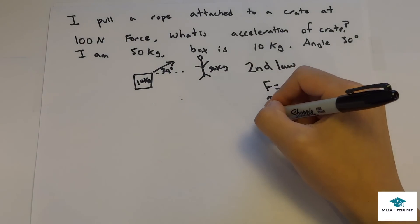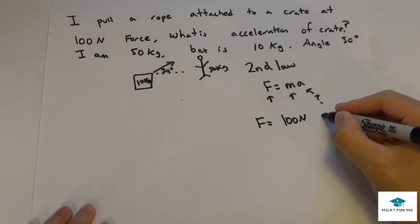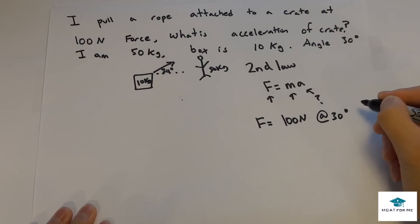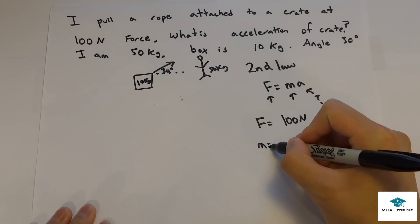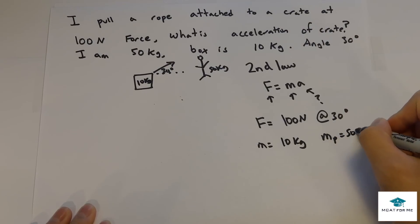So let's just write down what we know. We know the force is 100 newtons at 30 degrees. And we know the mass, well they give us the mass of the box which is 10 kilograms, and they give us the mass of the person which is 50 kilograms.